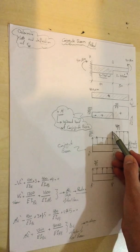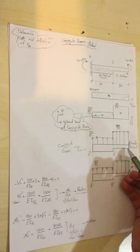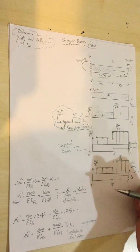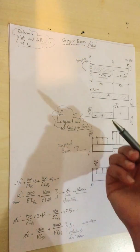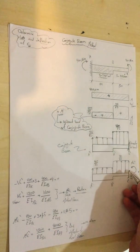For this segment, it's also distributed load acting upward, and this is the conjugate beam that I drew. Because the requirement of this example needs the slope and deflection at C, I will make a section just at left of C.